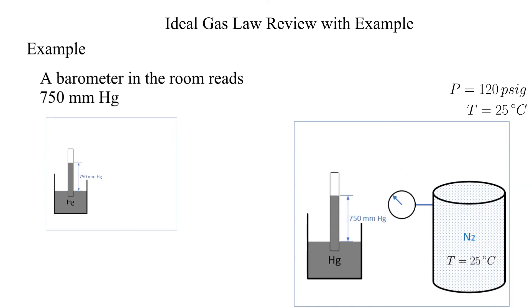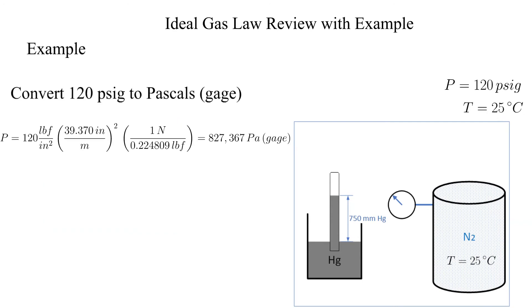A barometer in the room reads 750 millimeters of mercury. We will use this indication to calculate the atmospheric pressure in pascals. First, let's go ahead and convert 120 psi G to pascals gauge.